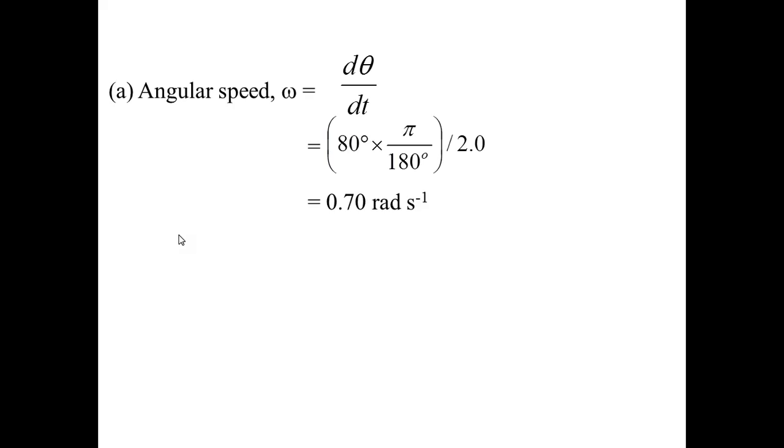So let's take a look at how we solve A. Using the equation omega equals d theta over dt, angular displacement is given as 80 degrees. So I need to convert that to radians by multiplying pi and dividing by 180 degrees.